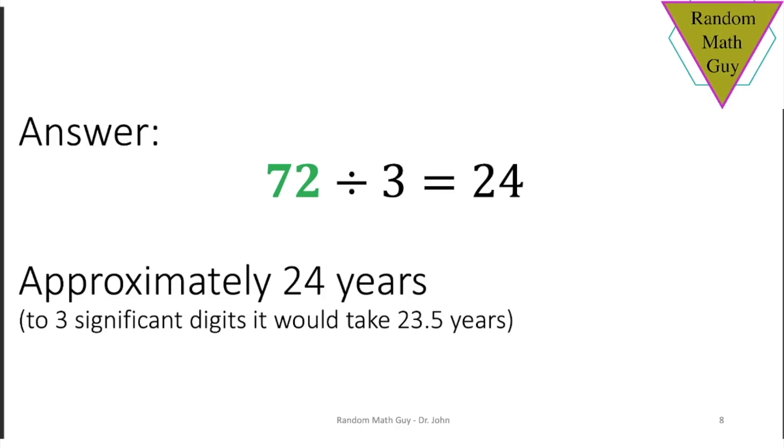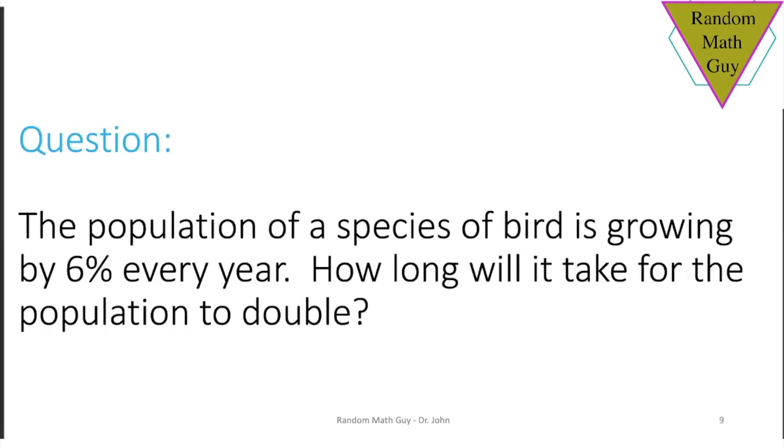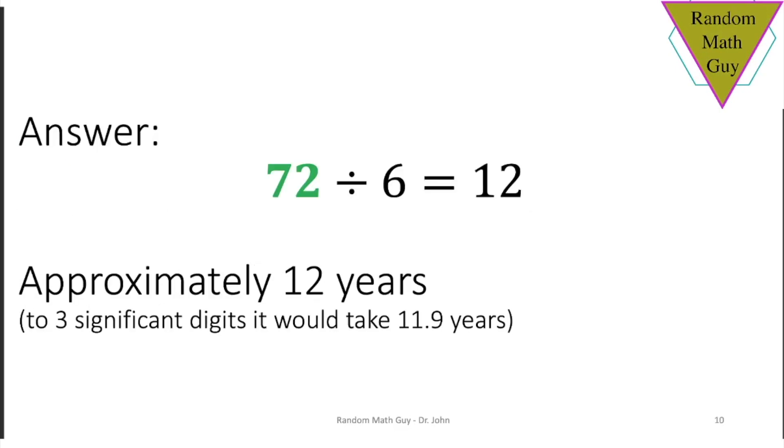Let's try to apply this to some other field beyond finance. How about biology? So what if you had a particular species of bird that's growing by 6% every year? How long would it take for that population to double? If you want a very quick and pretty damn accurate estimate, the answer is 72 divided by 6, or 12 years. The answer is actually close to 11.9 years, but 12 years is amazingly close. What a simple estimate.